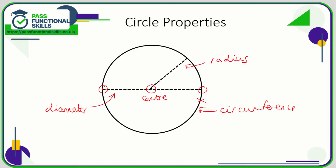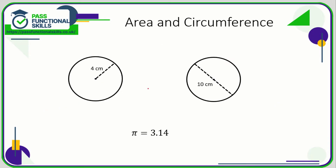The diameter is double the length of the radius, or the radius is half the diameter. So the four terms are: the center, the circumference (the distance all the way around the outside), the radius (a line from the center to the circumference), and the diameter (a straight line from one side of the circumference to the other that passes through the center). Now with circles we need to remember two formulae — for the area and for the circumference.